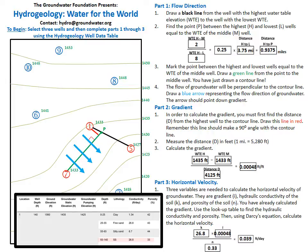Now that we know sandstone is the saturated material with the highest conductivity, we can plug the needed information into Darcy's equation to calculate horizontal velocity. In Darcy's equation, hydraulic conductivity is K, gradient is I, and porosity is n. Using the equation, we calculate a velocity of 0.039 feet per day. As you can now see, groundwater does not move very fast.